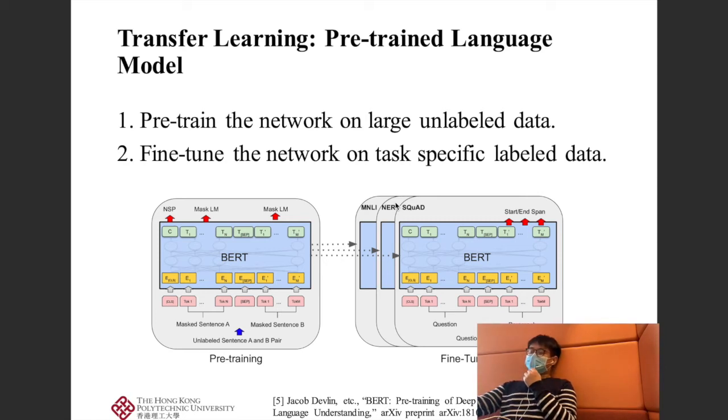After training this deep neural network using these two tasks, we fine-tune our network using task-specific labeled data, that is our text classification training dataset.